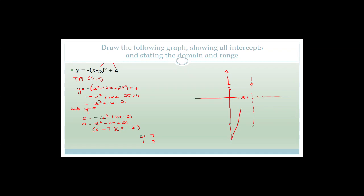So the graph goes up — it's worse on this digital pen and pad, I apologize profusely. This point here would be three and this is seven. The turning point would be x is five, y is four. So we've got the intercepts. Now we need to talk about the domain and range.